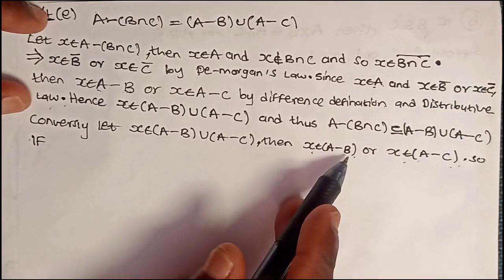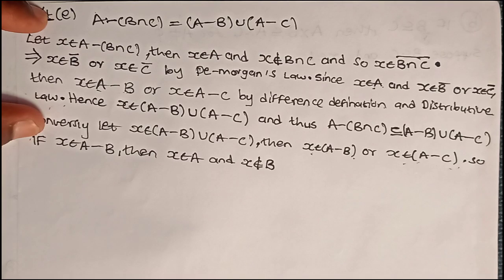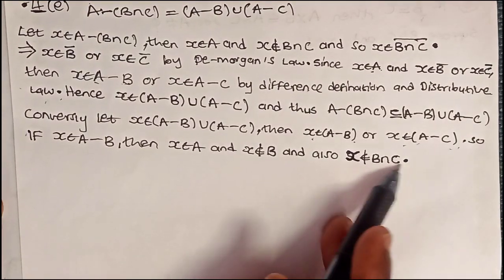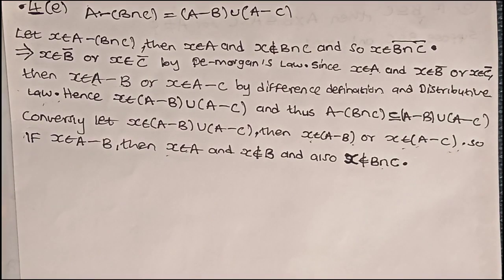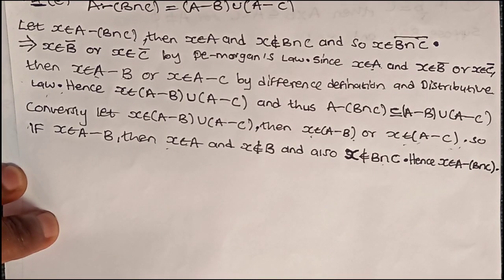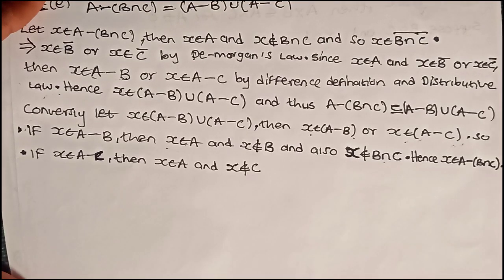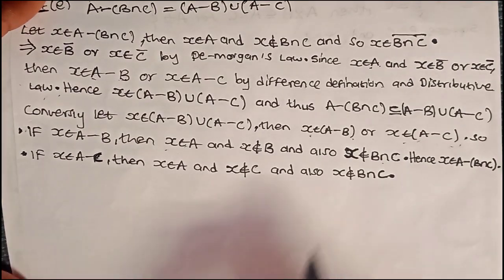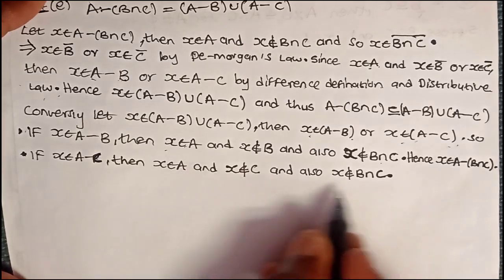If X is in A minus B, then X is in A and X is not in B. If X is not in B, it won't be in B intersect C. Since X is not in B intersect C but X is in A, then X will be in A minus (B intersect C). So we have shown the first case. For the second case, if X is in A minus C, then X is in A and X is not in C. Since X is not in C, it will not be in B intersect C. X is not in B intersect C but it is in A, so it will be in A minus (B intersect C).